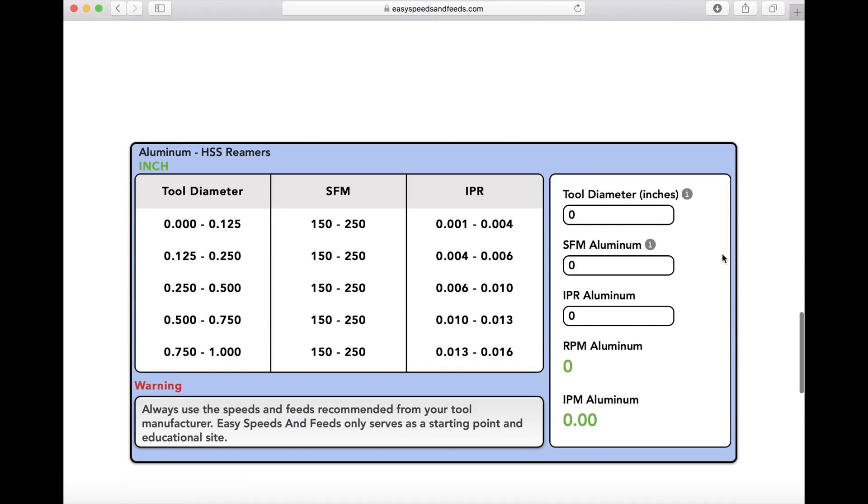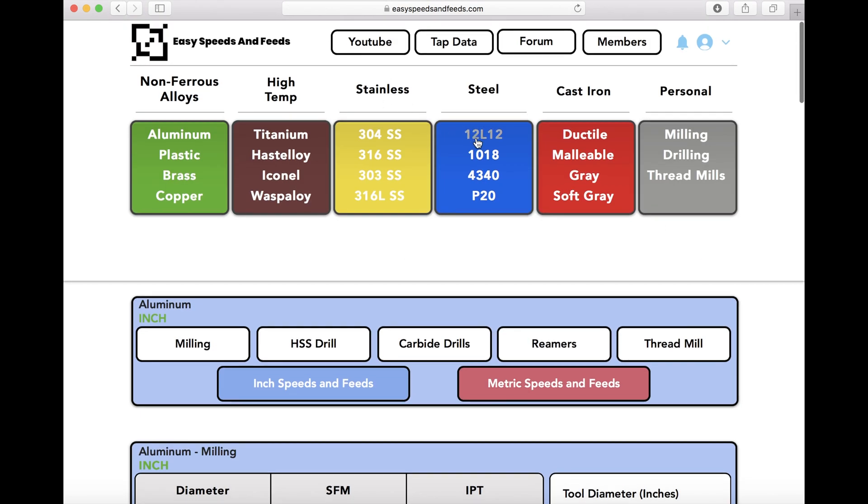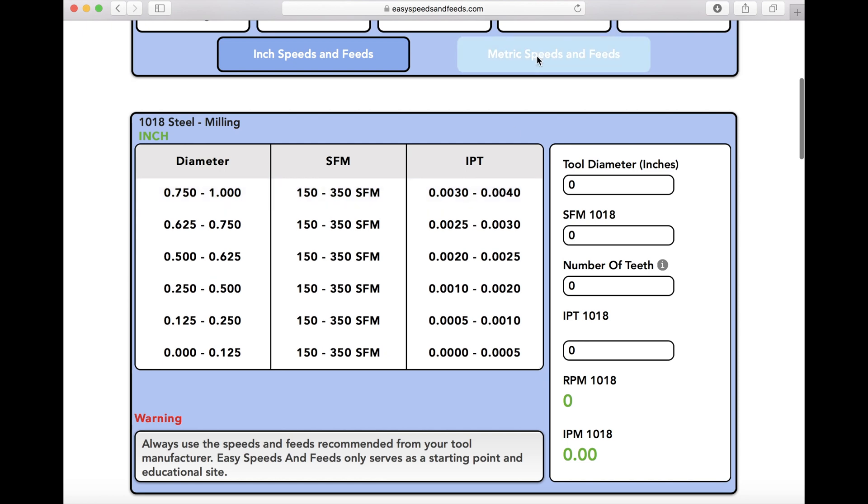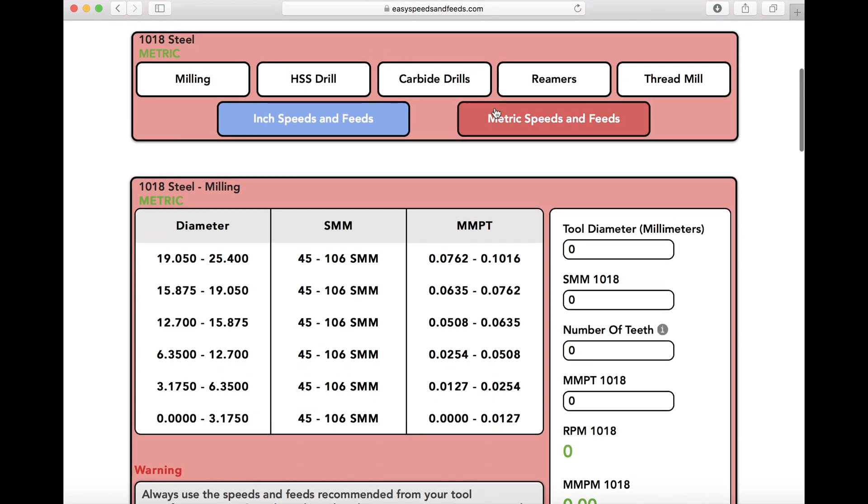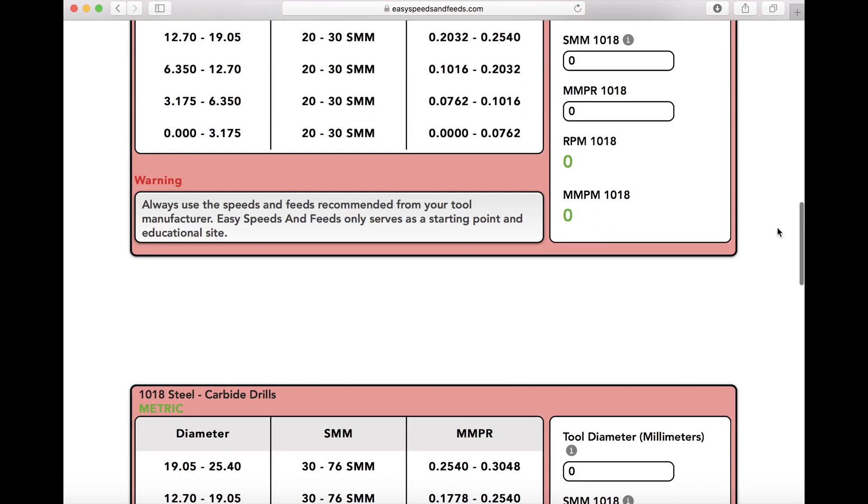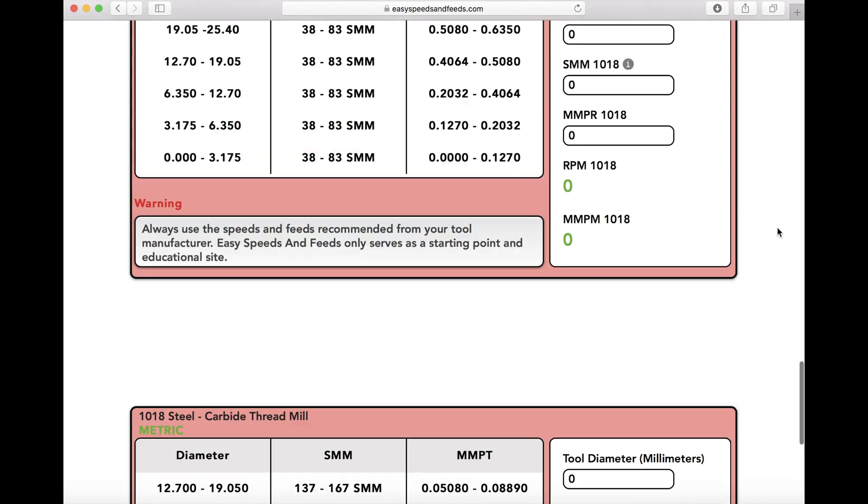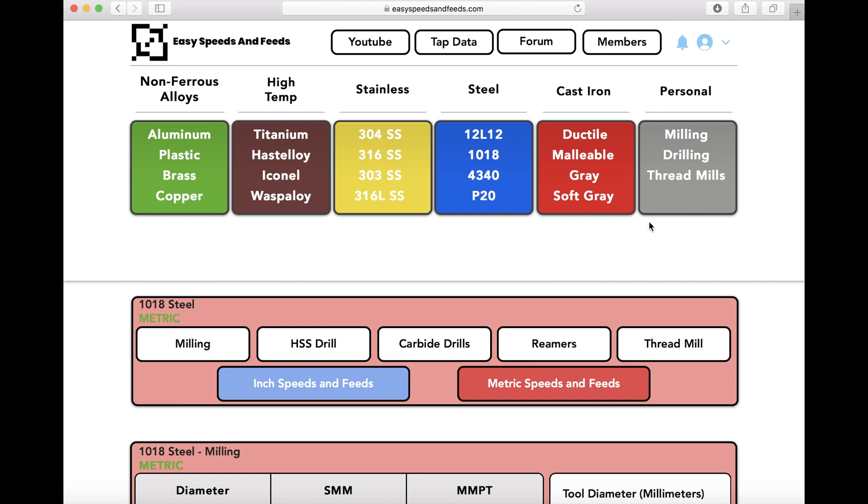The website was originally just a calculator where you could calculate milling, drilling, thread milling for different materials like aluminum. We just clicked on 1018 steel and also had metric speeds and feeds - same thing for milling, drilling, and thread mills. But now we've taken things a step further.